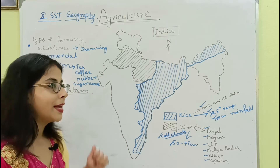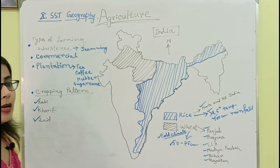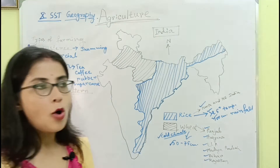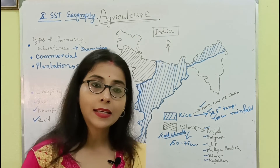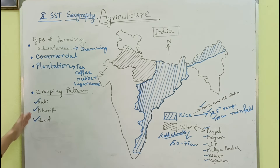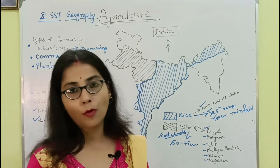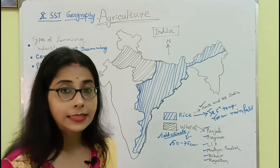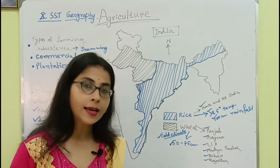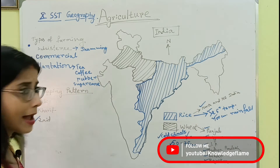Now the cropping pattern — meaning how many types of crops are produced in our country. Season-wise, we can categorize them into three parts: Rabi crop, Kharif crop, and Zaid crop. Rabi crops are sown in October-November and harvested in summer. Examples include wheat, pulses, peas, and grams.